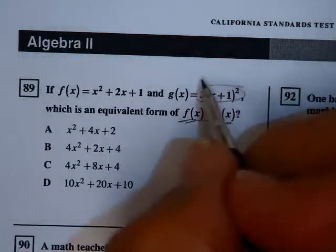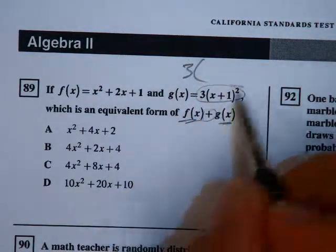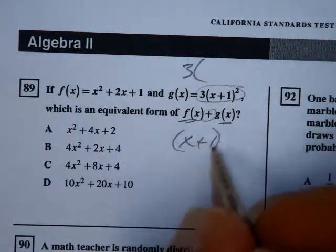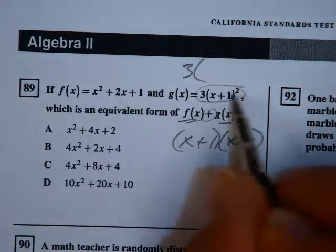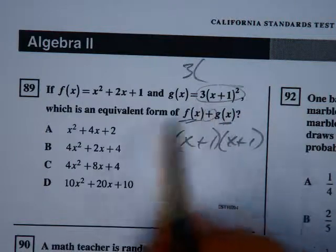So we get g of x and we simplify. We're going to take 3 and we're going to do the product of x plus 1 times x plus 1. That's what x plus 1 squared is. Please do not say x squared plus 1 because you're not foiling.